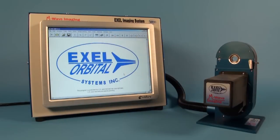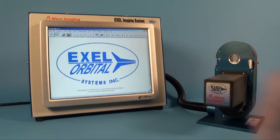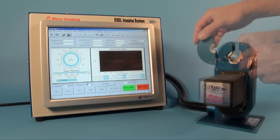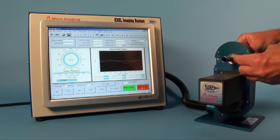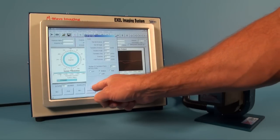Imaging a component is easy. Simply fixture the component or assembly into the imaging head, positioning the flaw in the scanning zone. In this case, the flaw is a 30 thousandths of an inch long by 15 thousandths of an inch deep EDM notch, simulating a crack.